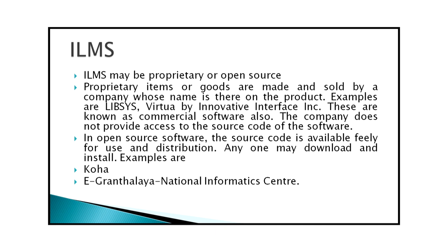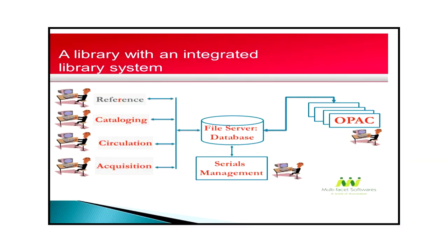Integrated library management software may be proprietary or open source. Proprietary software is made and sold by a company — examples include Lipsys and Virtua by Innovative Interface Incorporated — and the company does not provide access to the source code. In open source software, the source code is available freely for use and distribution. Examples include Koha and e-Granthali, provided by the National Informatics Center. A screenshot shows an integrated library system with different sections — reference, cataloging, circulation, acquisition, serials management — all connected to a single database, which is why it is called integrated.